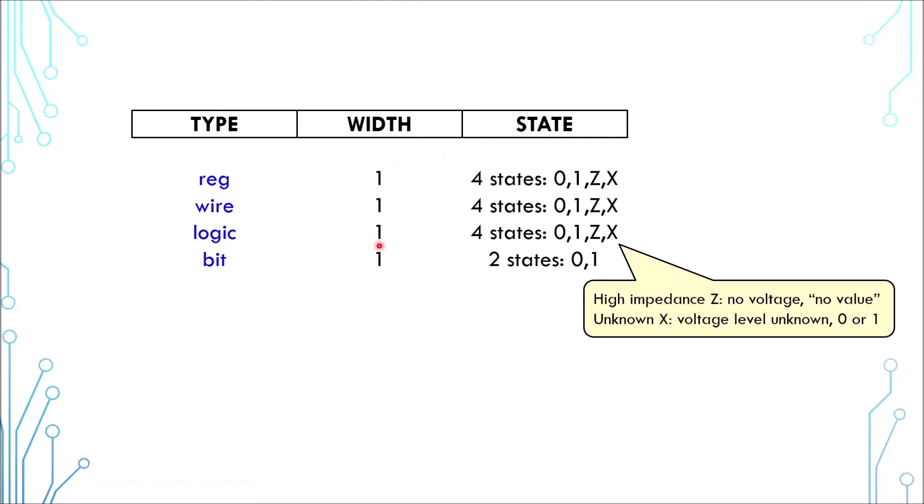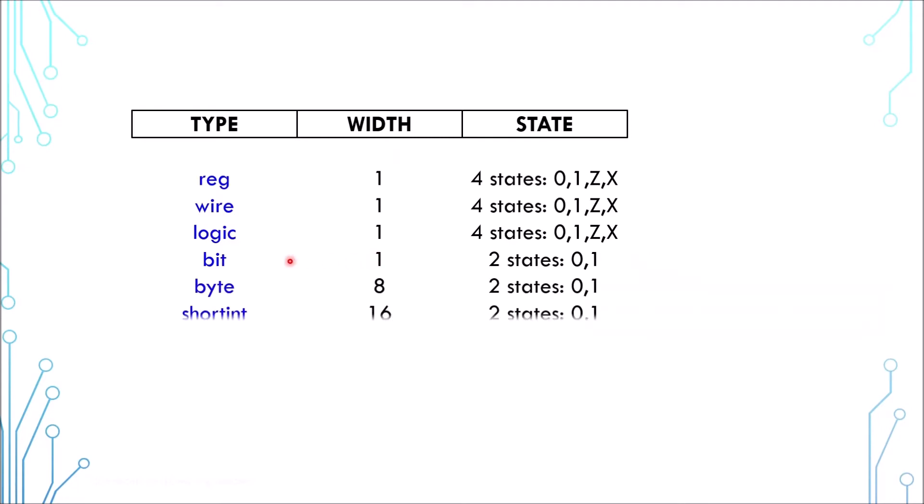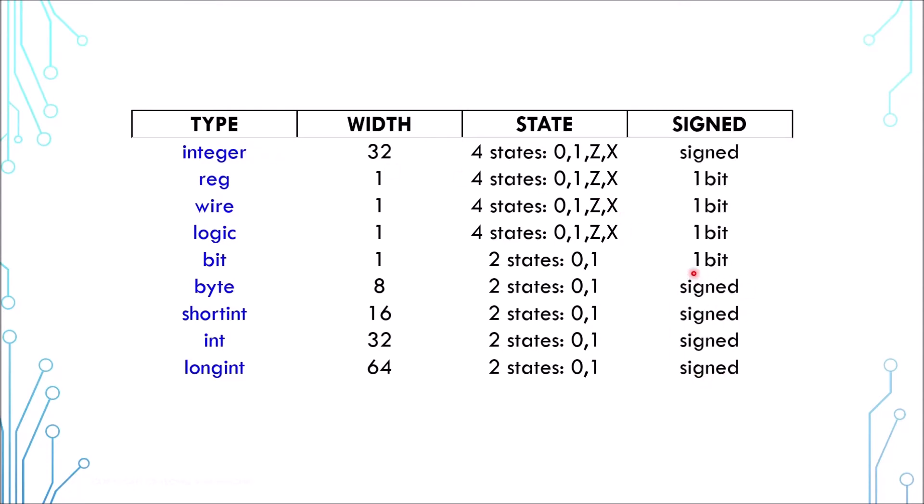All of these are one bit in width but can be extended to multiple bits. For convenience, there are predefined numeric data types with certain widths: byte, short int, int, and long int, which are 8, 16, 32, and 64 bits respectively. Four-state types have a 32-bit version called integer. Another aspect is that all multi-bit types are signed, where the most significant bit is treated as the sign—zero means positive and one means negative.